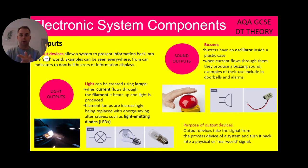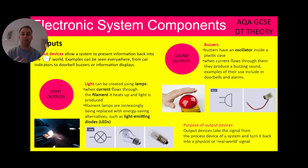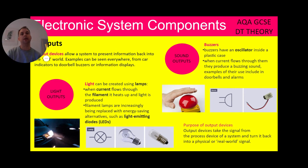So let's finally look at outputs. Output devices allow a system to present information back into the real world — they come out of that process and they manifest as a real world signal. Examples can be seen absolutely everywhere, from car indicators to door buzzers and information displays. I've given you two here — light and sound as the most simple and common ones you're going to be asked about. Light can be created using lamps. When current flows through the filament of a light bulb, it heats up and light is produced. Filament lamps are increasingly being replaced with energy saving alternatives such as light emitting diodes — LEDs. They last much longer and are much more energy efficient.